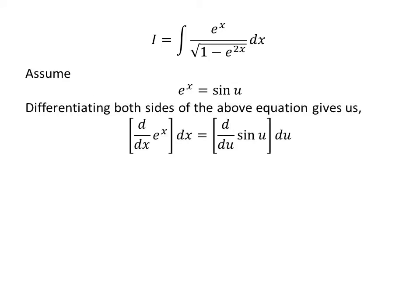Let us find the value of differential of x in terms of u. Taking the differential of both sides gives us: the derivative of exponential of x with respect to x times differential of x equals the derivative of sine of u with respect to u times differential of u. Since the derivative of exponential of x is exponential of x, and the derivative of sine of u is cosine of u, we get exponential of x times dx equals cosine of u times du.